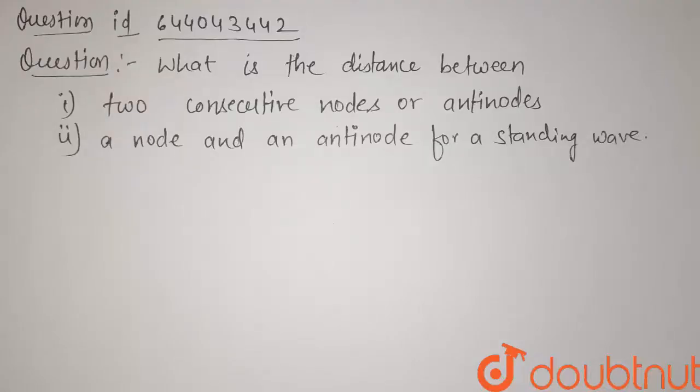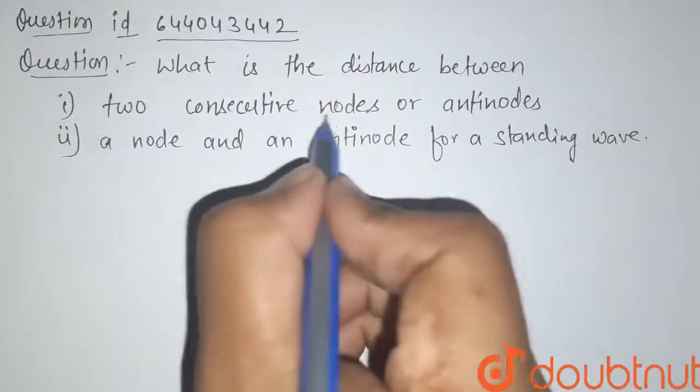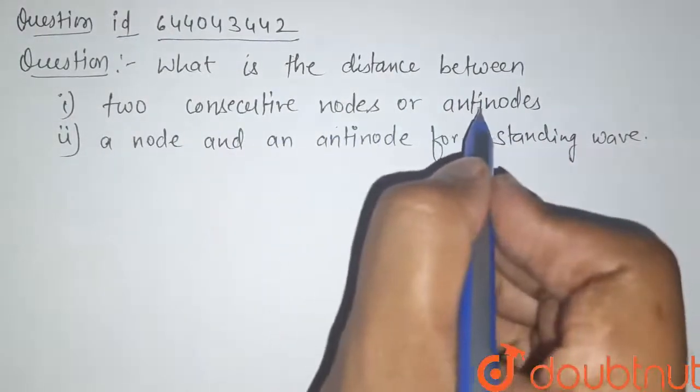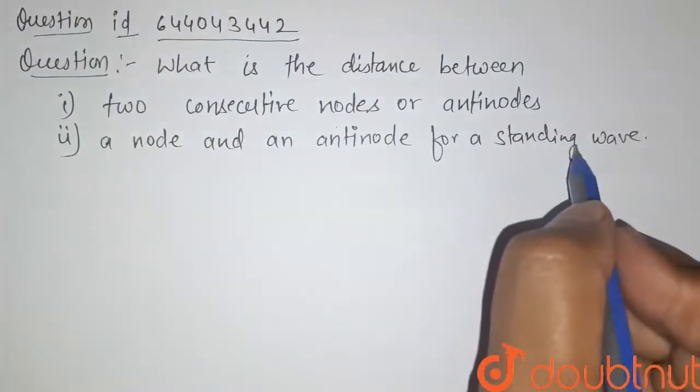Hello students, here is our question. What is the distance between two consecutive nodes or antinodes and a node and an antinode for a standing wave?